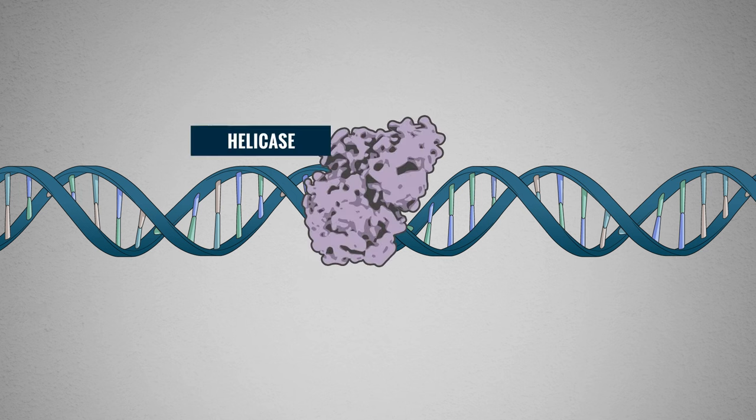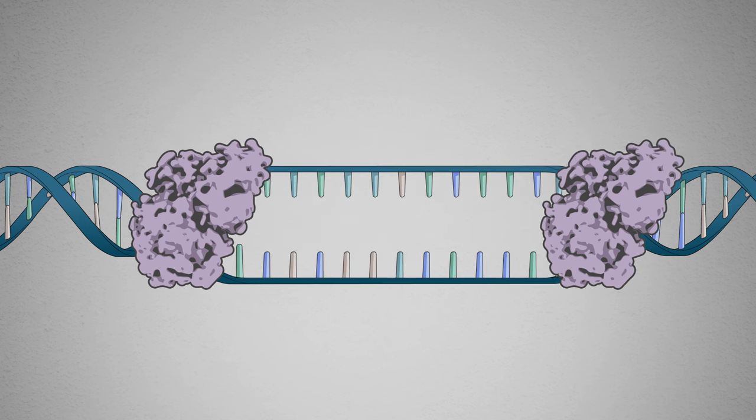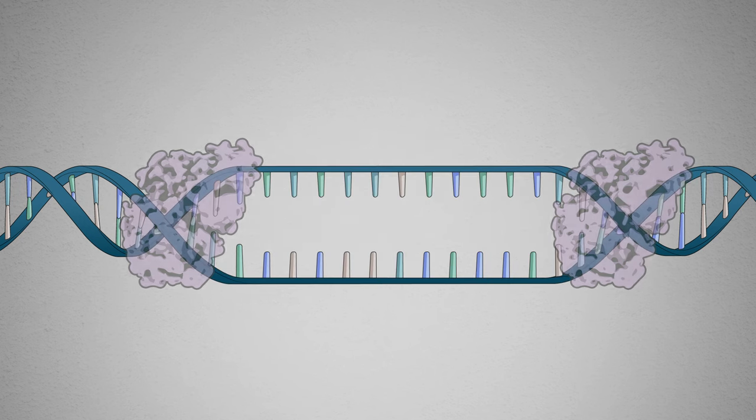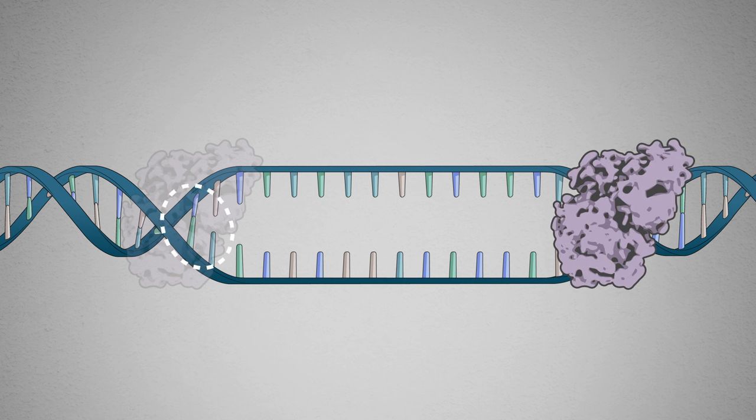The process begins when helicase enzymes unwind the double helix to expose the two single DNA strands, creating two replication forks. The mechanism of replication is identical at each fork, but we'll focus on just one replication fork for teaching purposes.